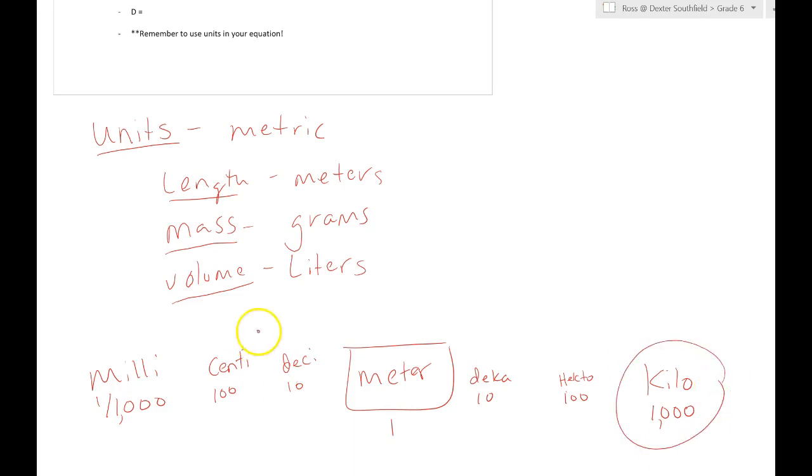The ones that we should really know are the meter, the kilo, the centi, and the milli. A milligram, a milliliter, a centimeter, and instead of meter it could be gram or liter, and a kilometer, kilogram, kiloliter. Those are the ones that we should know. That's the base unit—that's where we start off.